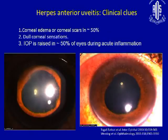Let's take an example of herpes anterior uveitis. Many of us don't look for corneal edema or corneal opacity and high intraocular pressure in a large number of these patients. So if you see this kind of setting, think of viral uveitis.